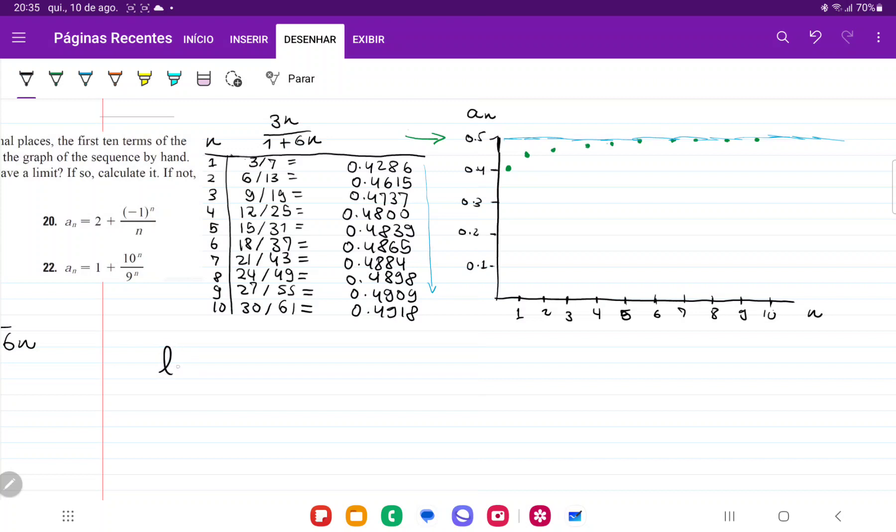So we're going to go the limit of 3n over 1 plus 6n as n approaches infinity. And to do this, we're going to divide everything by n, so this is the limit as n approaches infinity of 3 over 1—that should be 1 over n—plus 6.